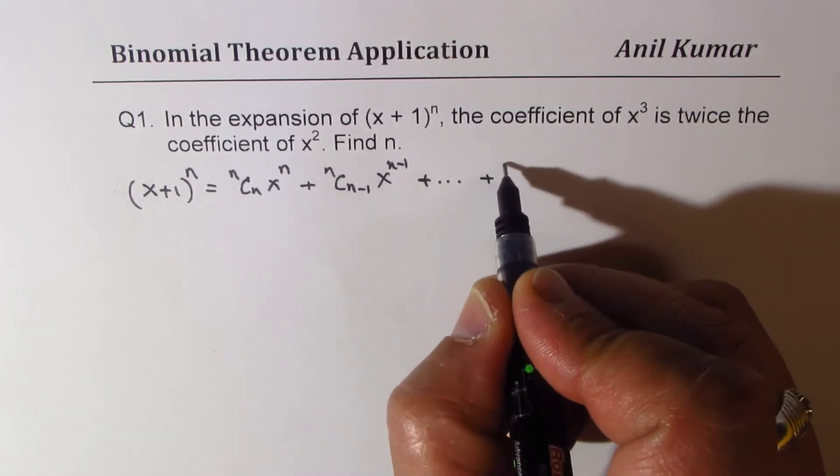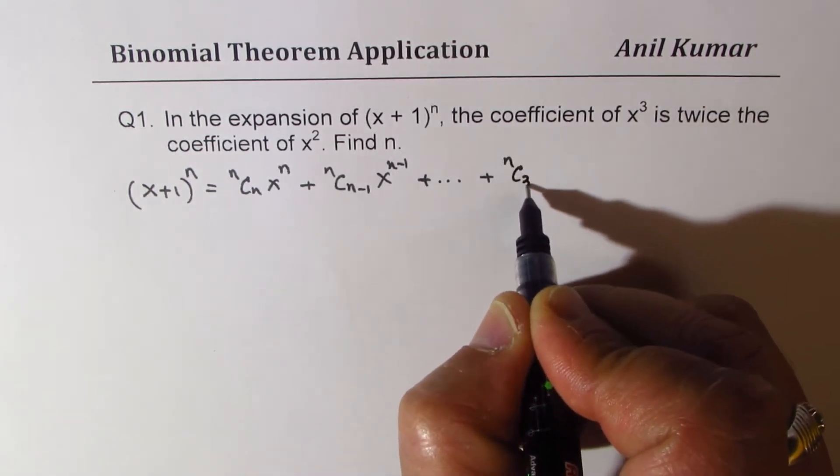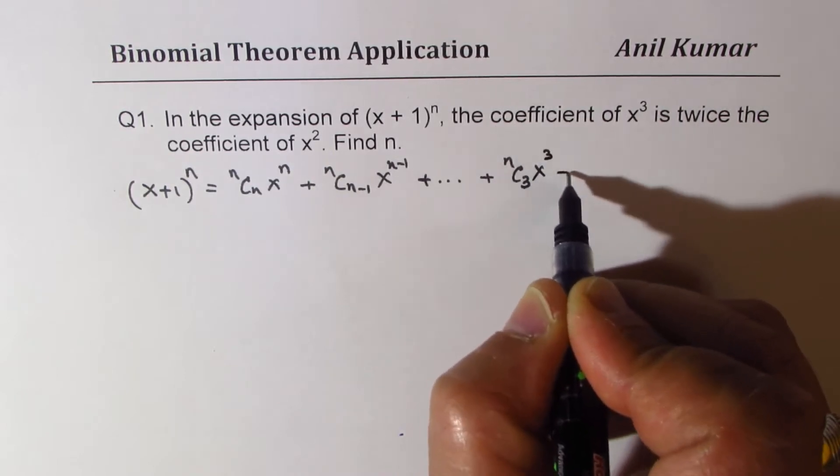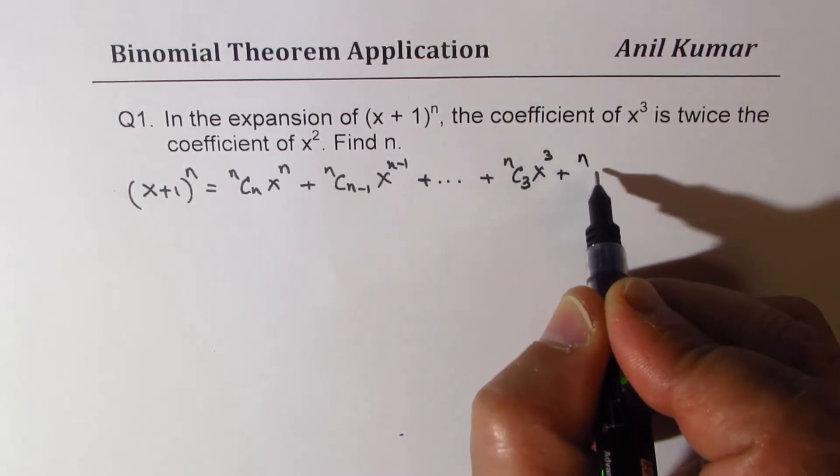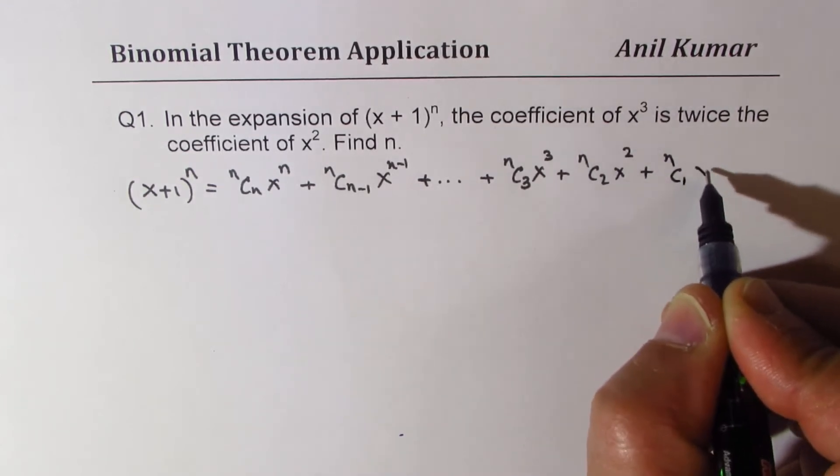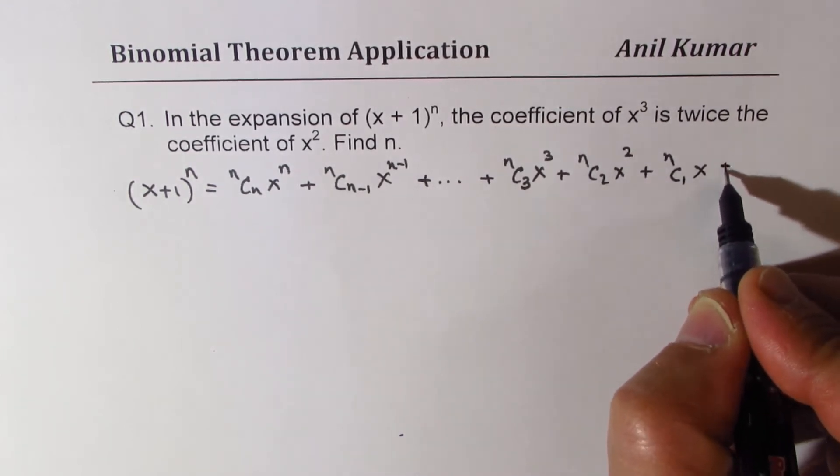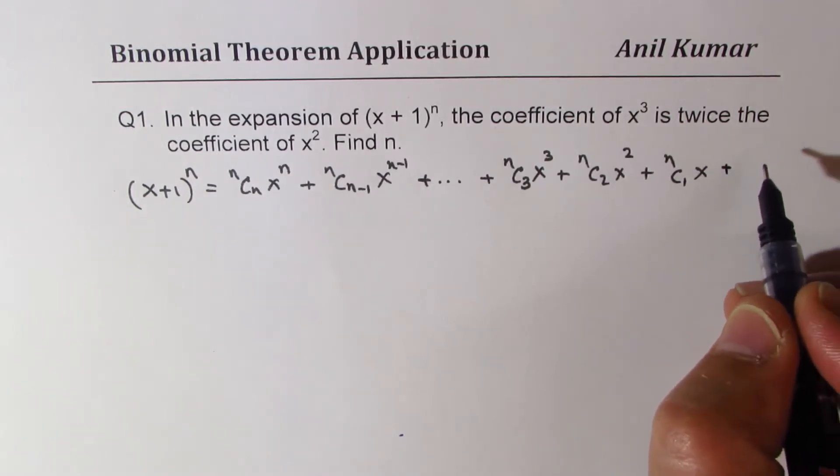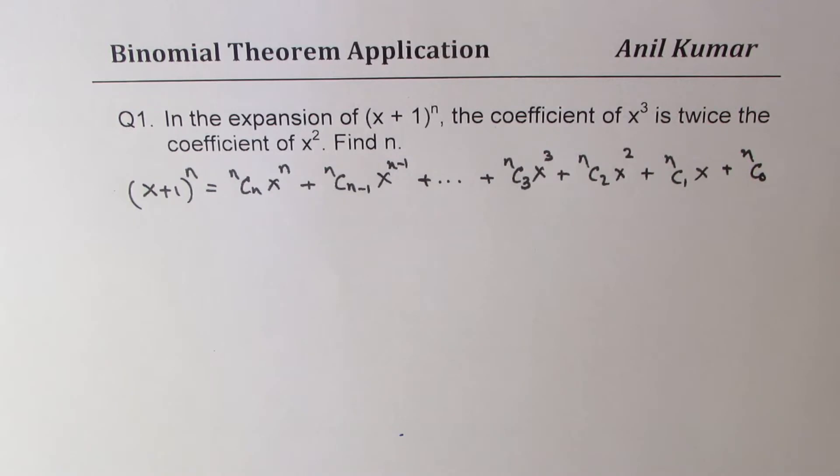So what we get here is nC3 x³ plus nC2 x² plus nC1 x, plus nC0, which is a constant. That is what we are going to get in this particular series.